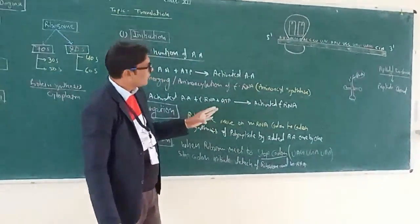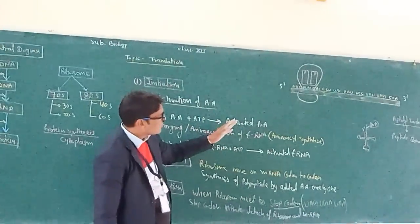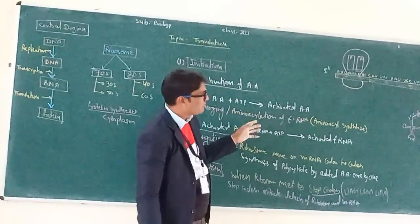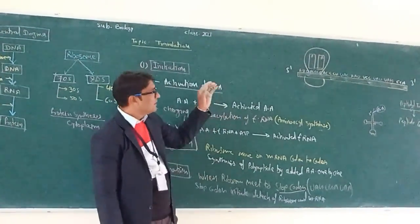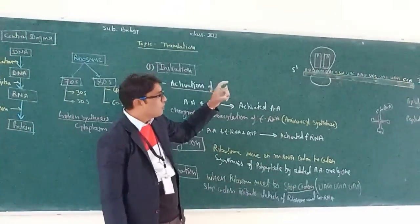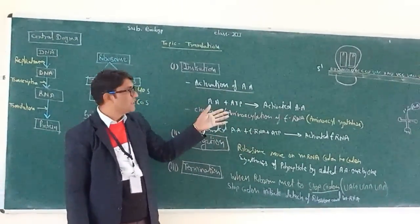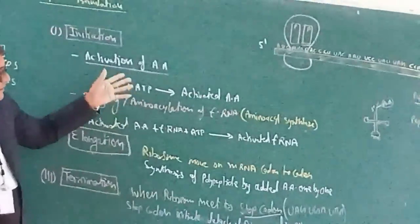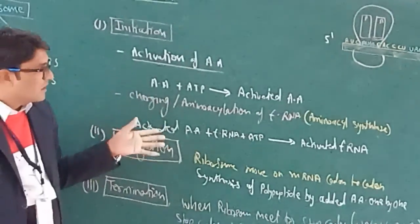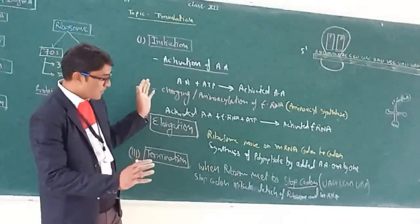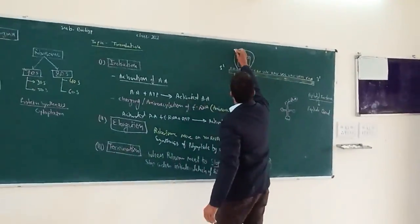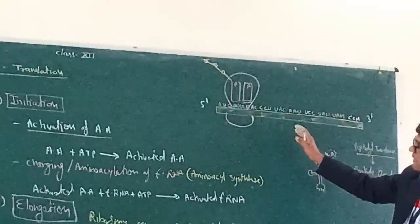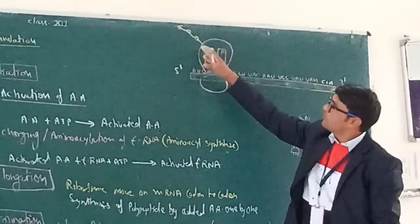After the stop codon, the ribosome detaches automatically, and the newly synthesized polypeptide detaches from the ribosome. Both subunits of ribosome — small and large subunits — detach, and thus our translation process is completed. The newly synthesized polypeptide chain is removed, and after modification, this protein is used in the biological system in different metabolic reactions.